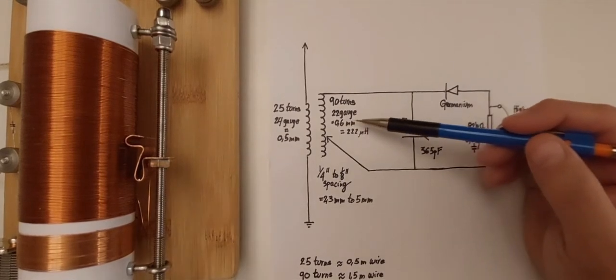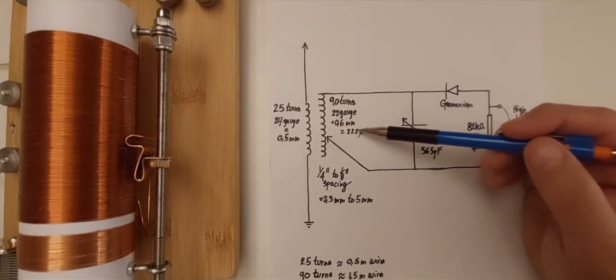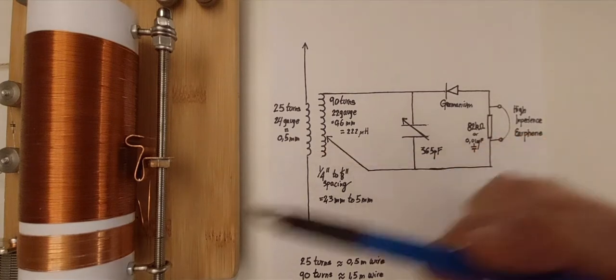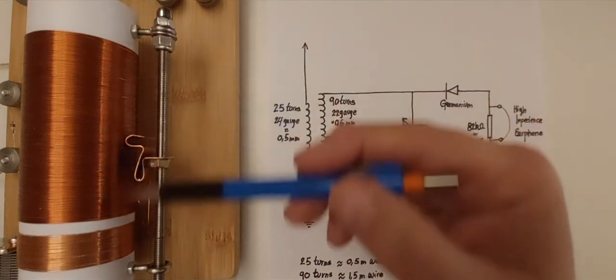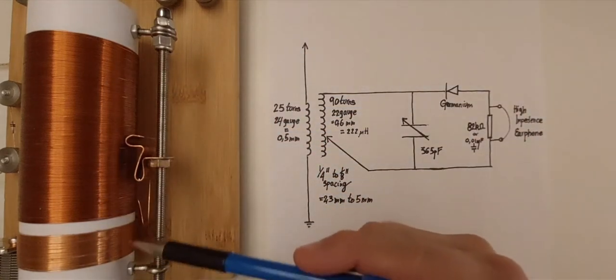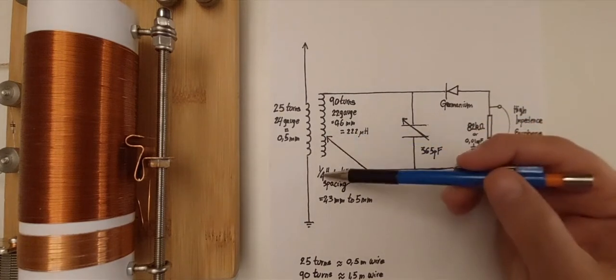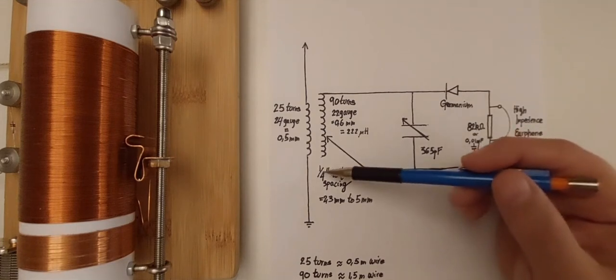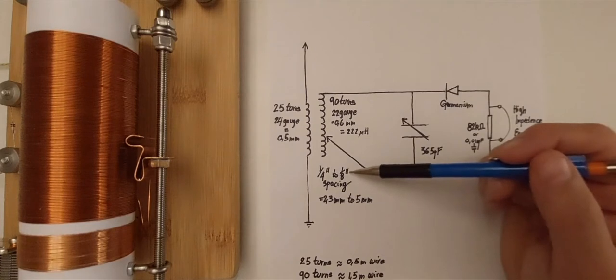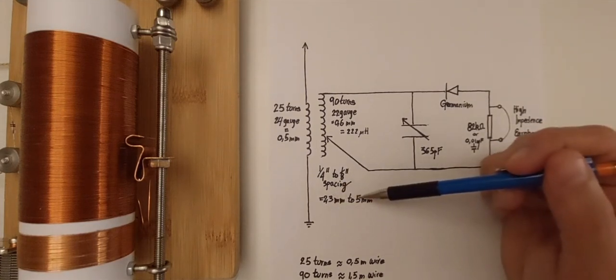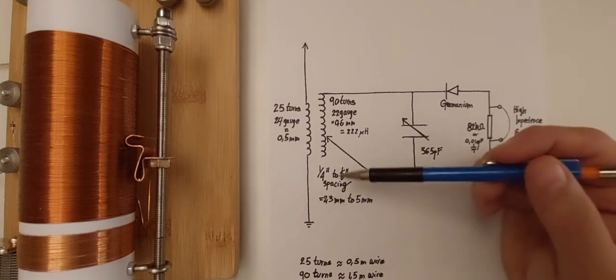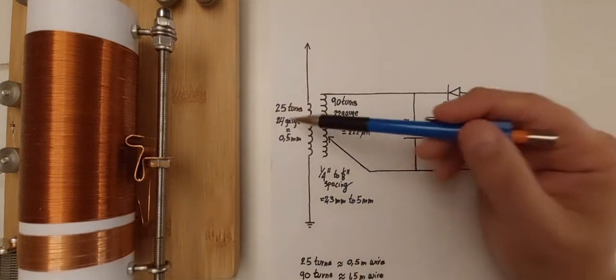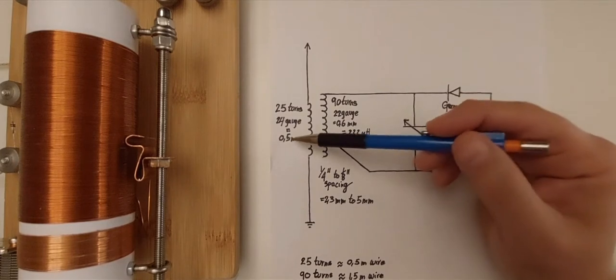That's 0.6 millimeters for me. I then worked out that these are 222 microhenry. The spacing between the tuned coil for the tuned circuit and the coil along the antenna ground system I did not find in the original schematic, of course, because it was not included there, but I found reportedly a quarter of an inch to an eighth of an inch spacing to be working, and those are an equivalent of 5 millimeters or 2.3 millimeters for me.